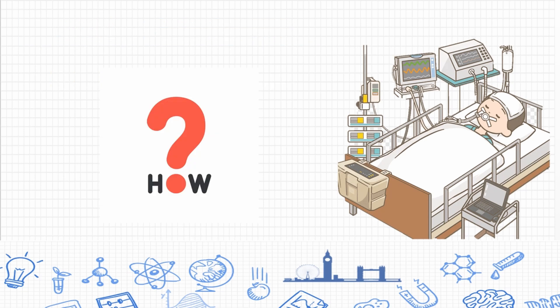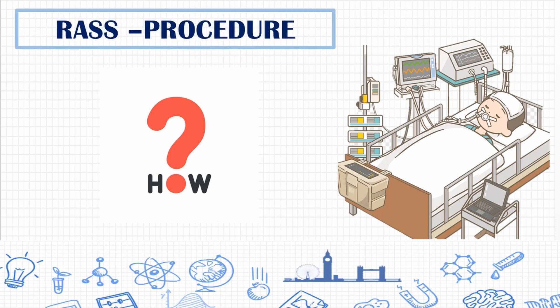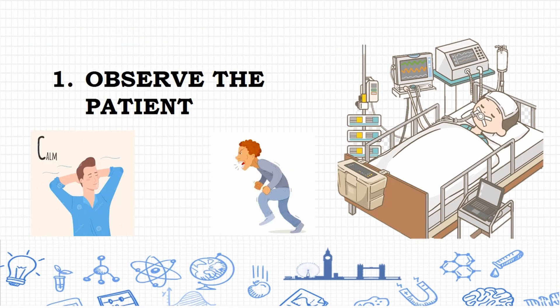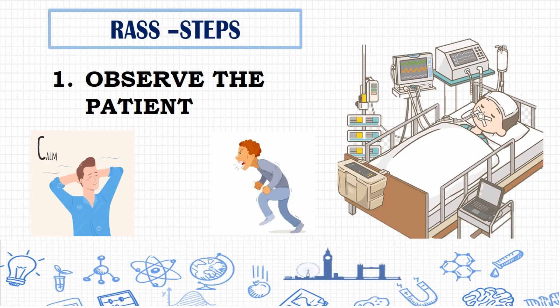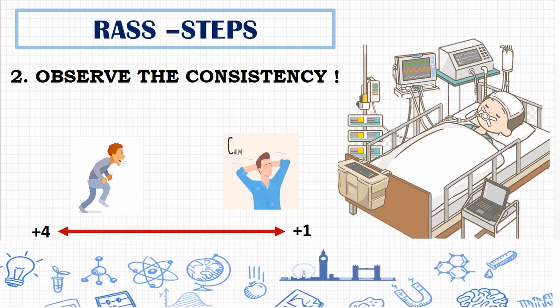The first step in assessment is to observe the patient. If the patient is alert and calm, you give a score of zero. Next, you observe the consistency of the patient's behavior — does the patient show restlessness or agitation?